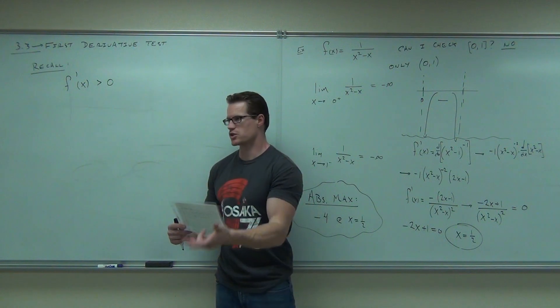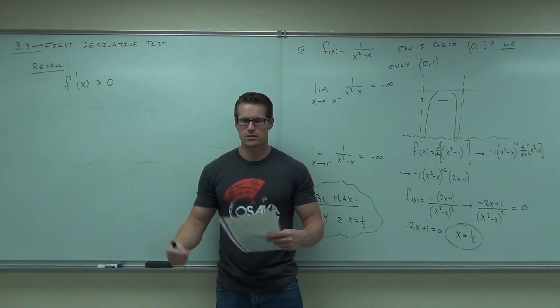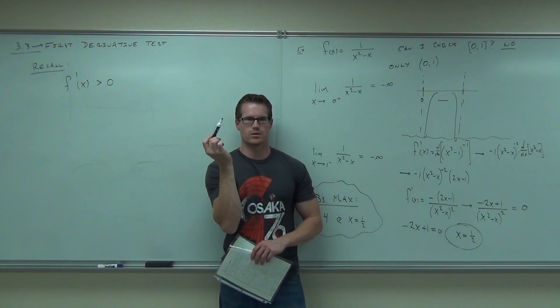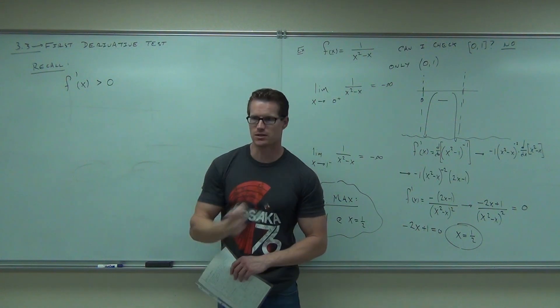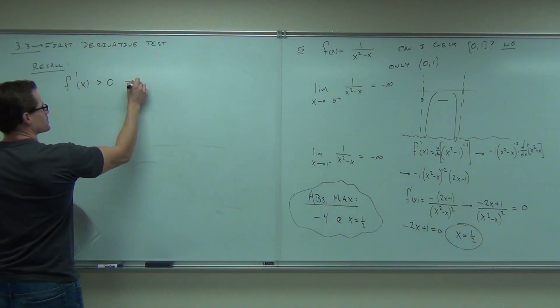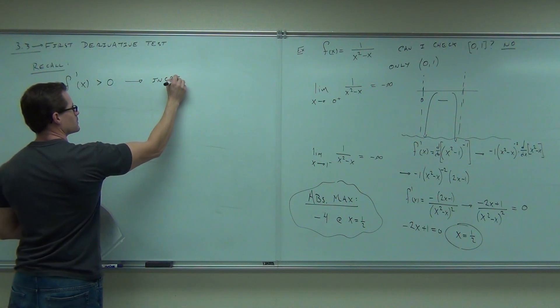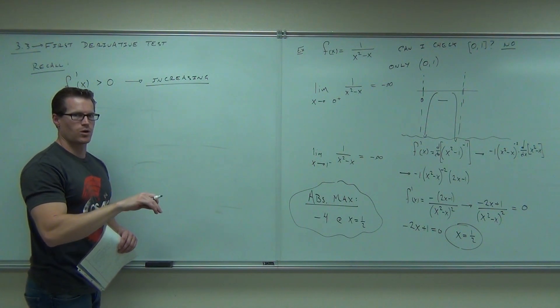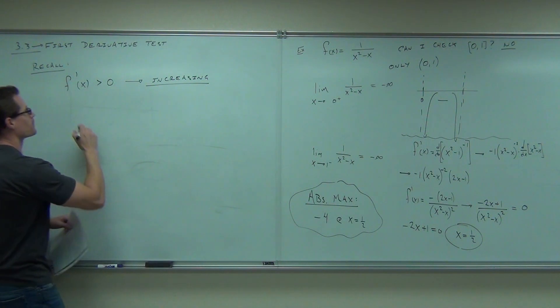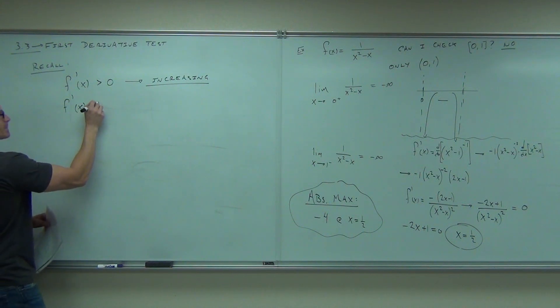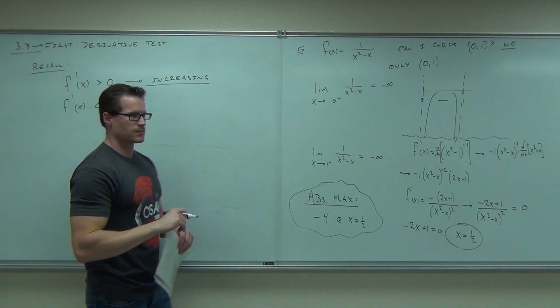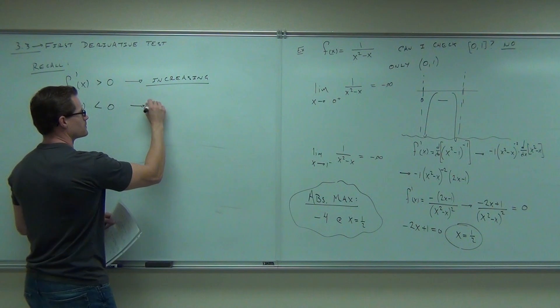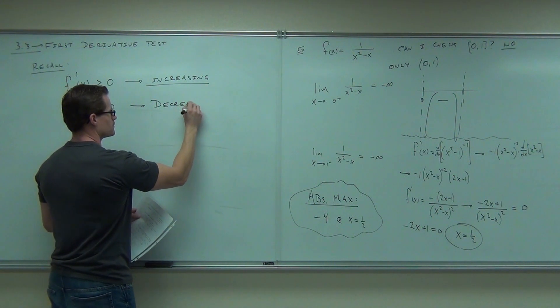Second derivative tells you how the slope is changing. So you need the second derivative to do that. f'(x) > 0 says the slope is positive. If slope is positive, you're like this, right? What's your line doing? Going up or down? Increasing. This says increasing. What does f'(x) < 0 mean? Decreasing. Definitely decreasing. Slope is negative. First derivative negative, slope is negative. Decreasing.